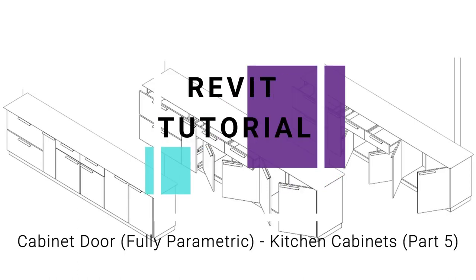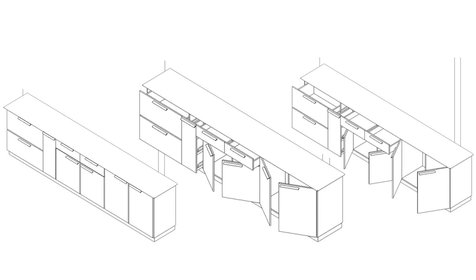Hello everyone, this video is the final installment in the series of creating the family of a fully parametric kitchen cabinets. The link to the previous four videos is given below in the description box. You can not only change the height, width, depth, and sheet thickness of the cabinets, but you can also open and close the cabinets and drawers. Before we start, please like and share my videos, leave a comment below, and subscribe to my channel.